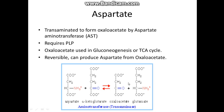Aspartate is transaminated to form oxaloacetate by aspartate aminotransferase — that's the last step in your TCA cycle, or first, depending on your perspective. It requires PLP, and oxaloacetate is used in either gluconeogenesis or the TCA cycle. In gluconeogenesis, pyruvate is converted to oxaloacetate and then back to glucose via multiple steps. You can also produce aspartate from oxaloacetate — another product you can get from the TCA cycle. The reaction again requires alpha-ketoglutarate and glutamate.